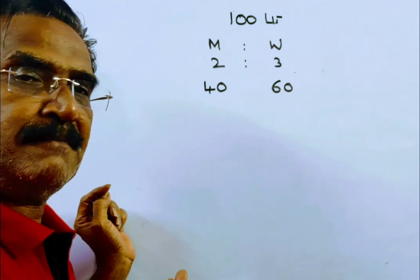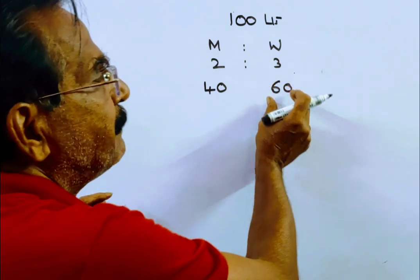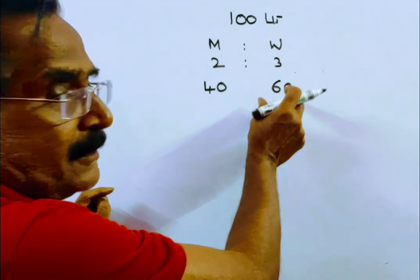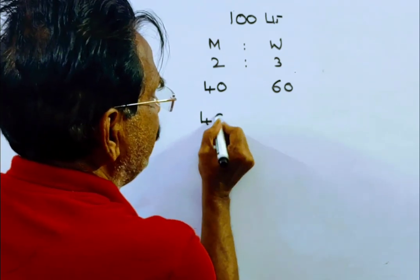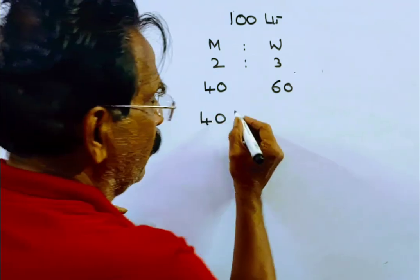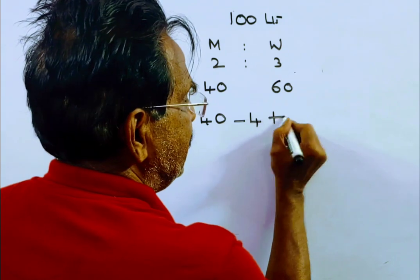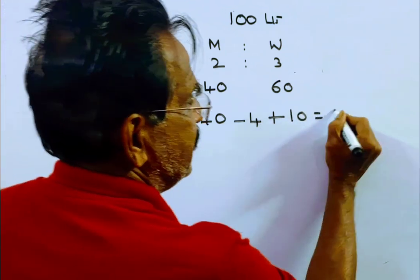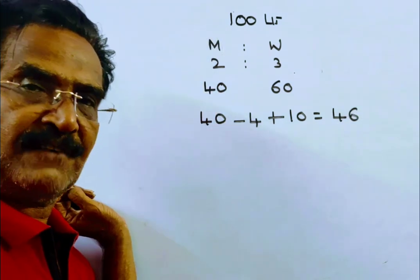This is the initial quantity of milk: 40 liters. 10% of the milk is drawn — that is 4 liters is drawn — and 10 liters of milk is added. So 40 minus 4 is 36, plus 10 is 46. This is the quantity of the milk after the first operation.